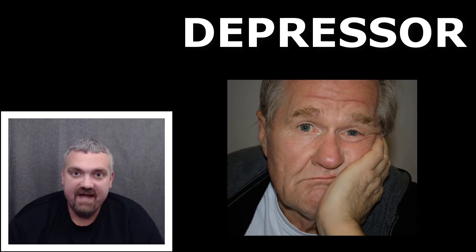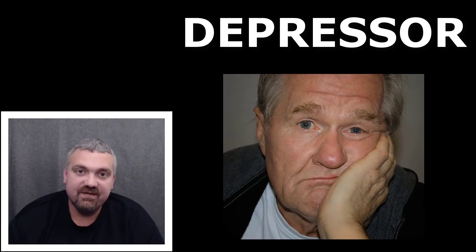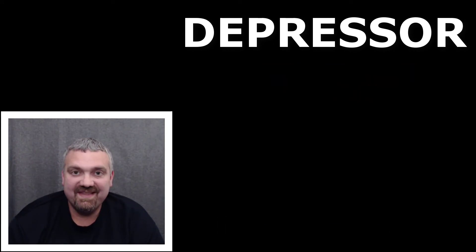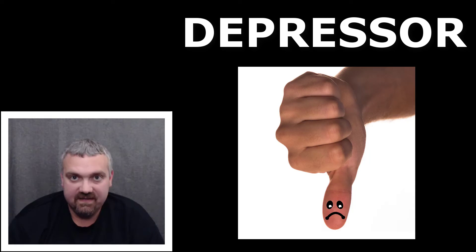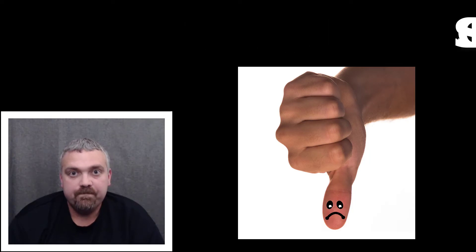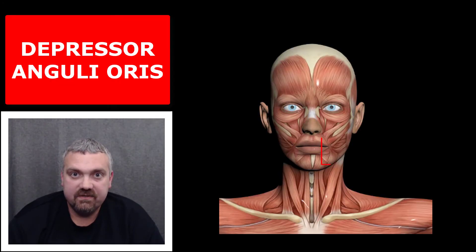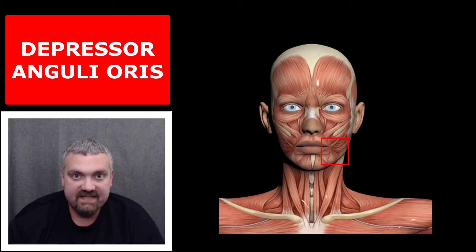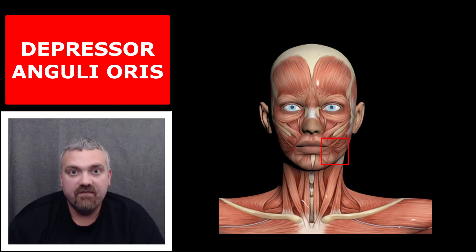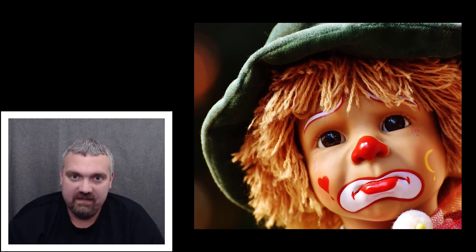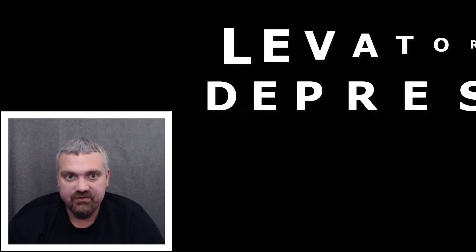Depressors — they're not just boring buzzkills at parties — they bring things down, they depress things. A key example here is the depressor anguli oris. It depresses or brings down the angle — anguli — of the mouth — oris. These muscles play a major role, I hope you don't use them often, in frowning. So those are your levators and your depressors.